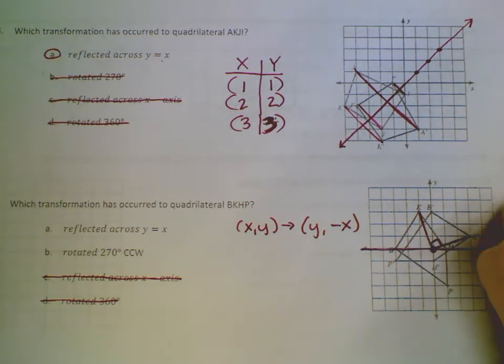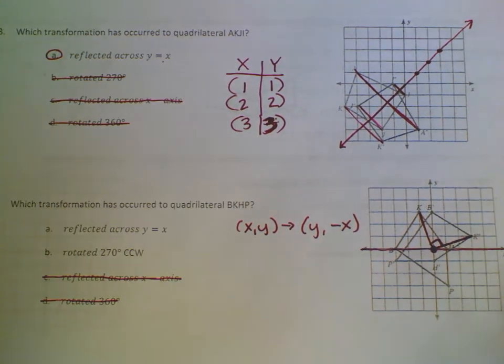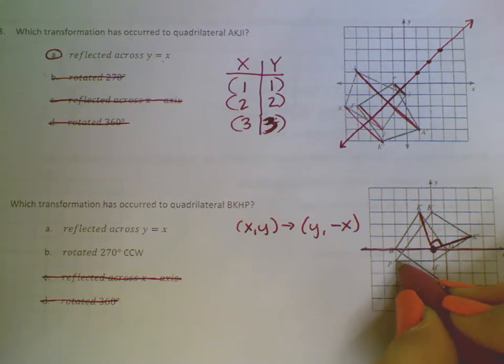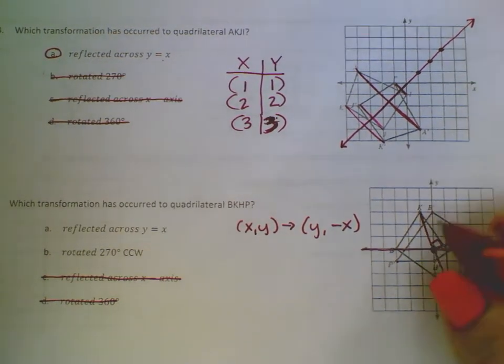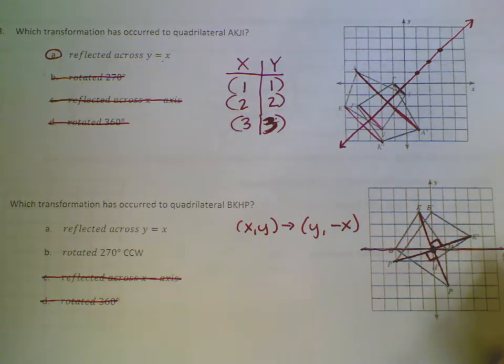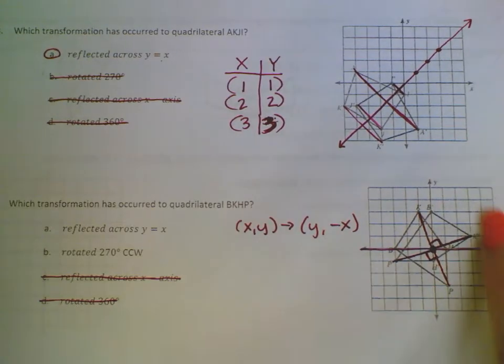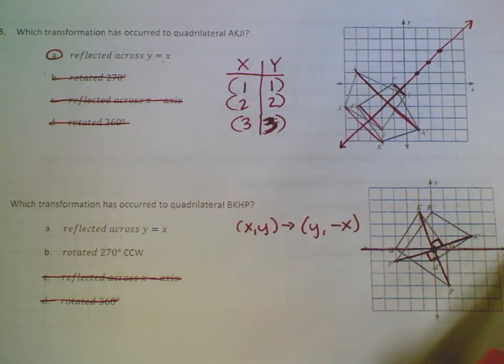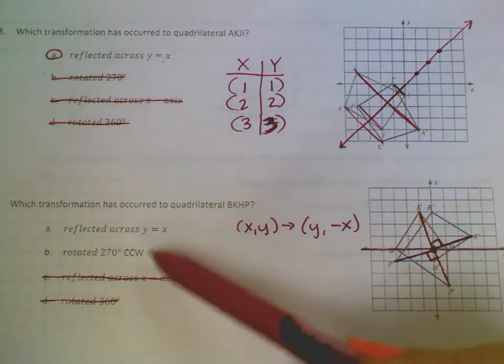But that would be moving clockwise because you need to look at where your pre-image is. My pre-image would have to go clockwise 90 degrees to get here. And I can see that this is a 90 degree angle. So it looks like 90 degree clockwise is what I'm looking for. However, that is not an option here.